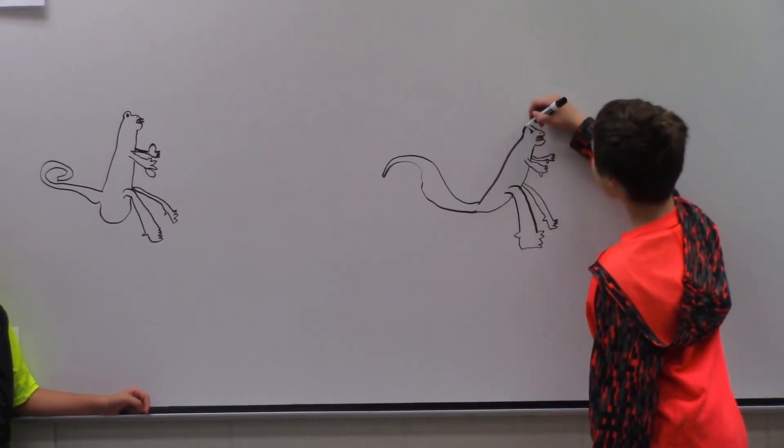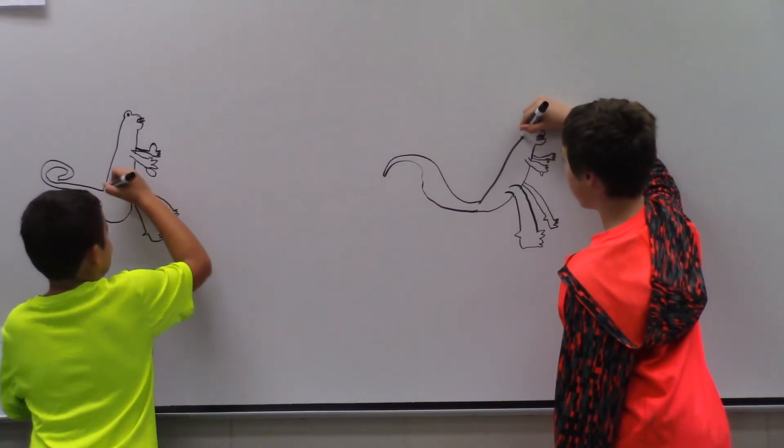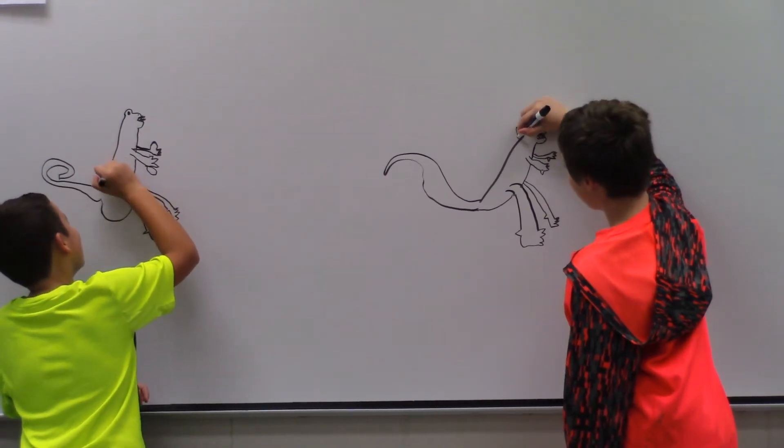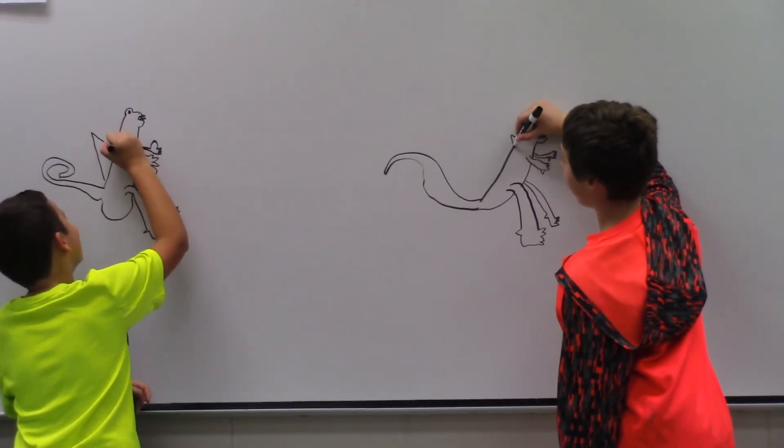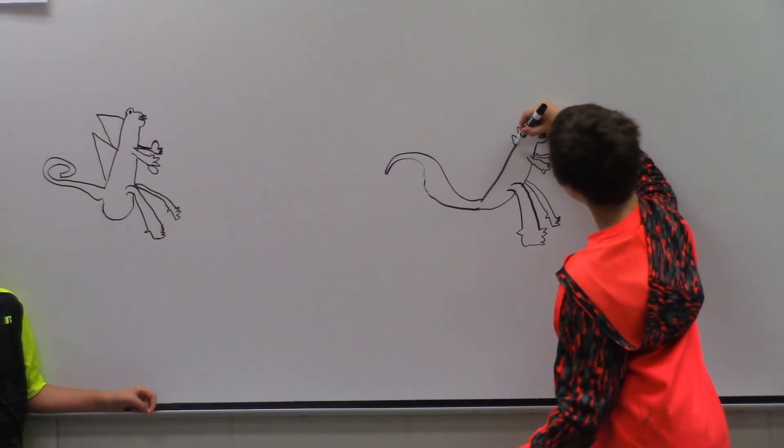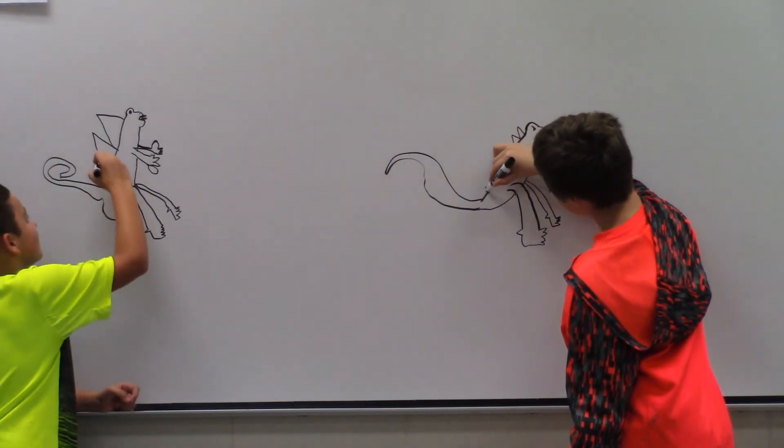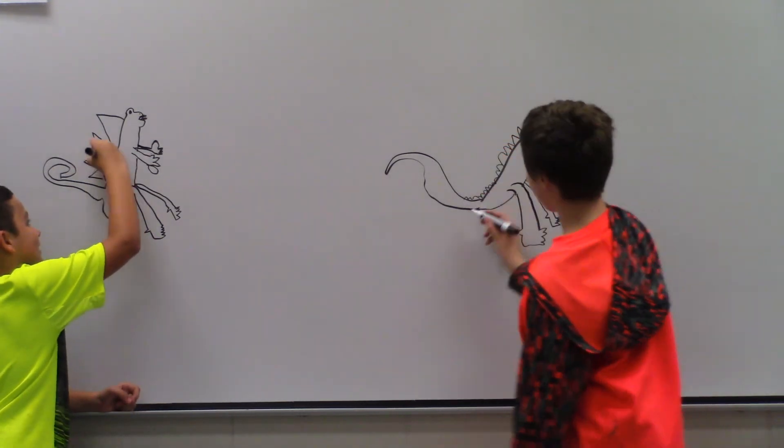Now, for the spikes, you can do any design of spikes you want. I'm just going to do the normal giant spikes. That looks like space cats a little bit. Make sure as you go, they get smaller.